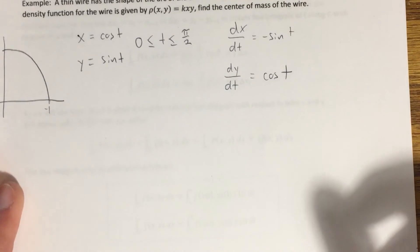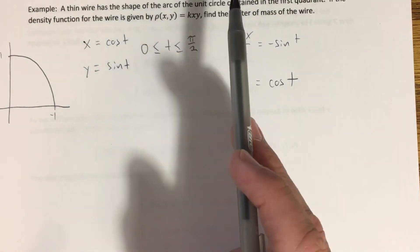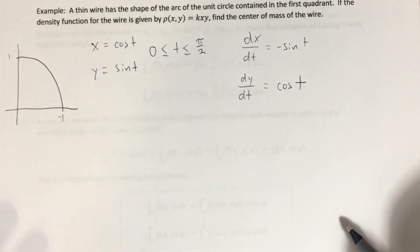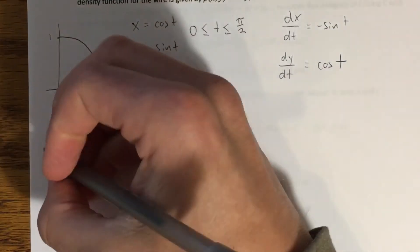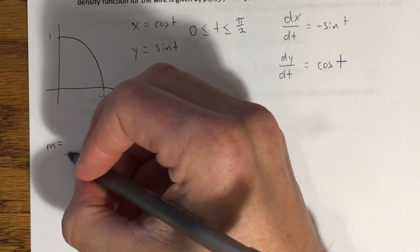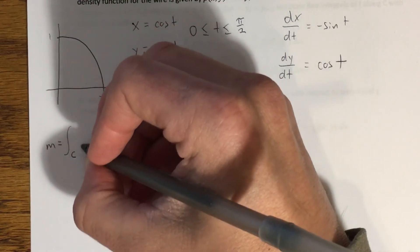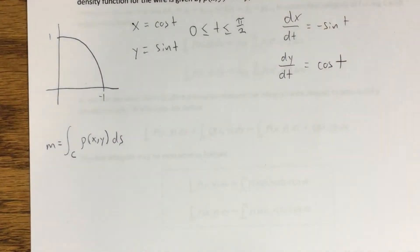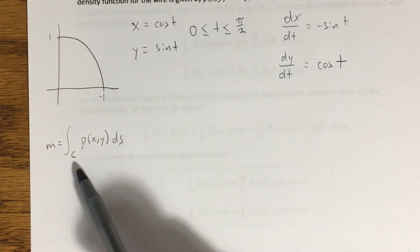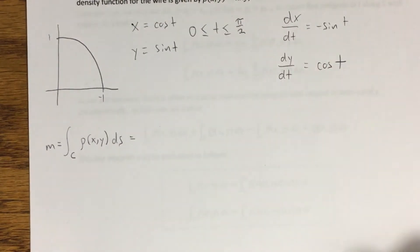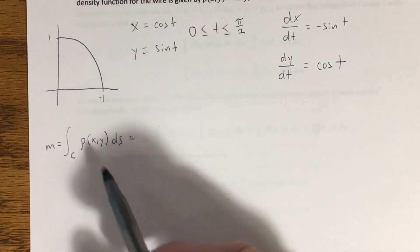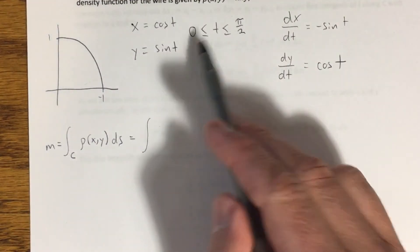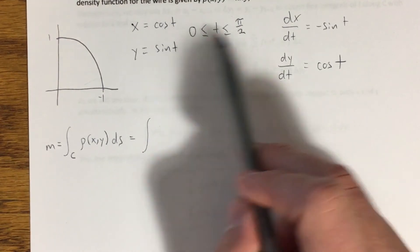So what I need to do is evaluate a line integral that's going to give me mass first, because I need to know the mass of this wire bent into this shape before I can find center of mass. So the mass is equal to the line integral, c, of our density function, x, y, ds. Line integral of that density function along c. In order to evaluate this, I know that my line integral is going to turn into a definite integral, and the limits are going to be given by the limits on my t here, the bounds on my t, 0 to pi over 2.